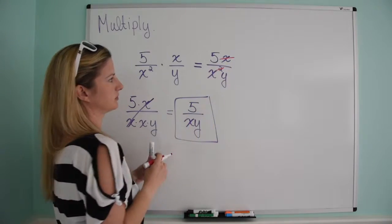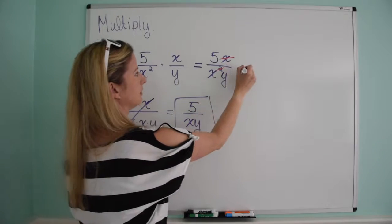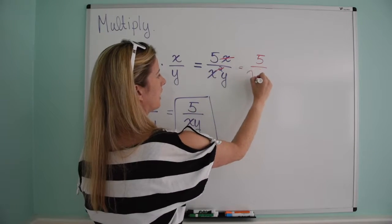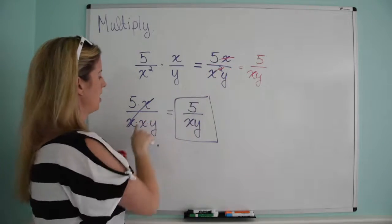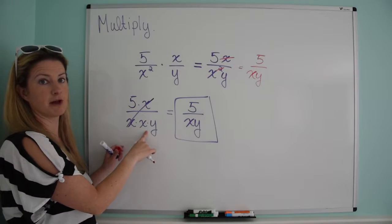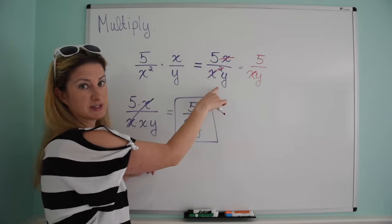this goes away and this just drops to a 1. So then I'm left with 5 over xy. That's perfectly fine too to show that there. But I wanted you to see where it's coming from because I sometimes have seen mistakes.